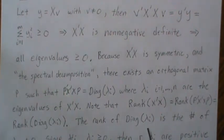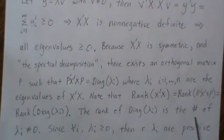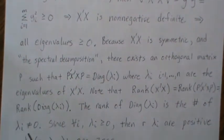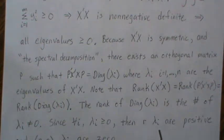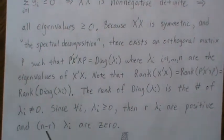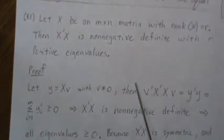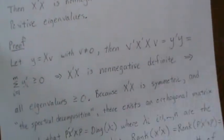But since we showed that each lambda I has to be greater or equal to zero, then R lambda I are positive, and N minus R lambda I are zero, and so this is proven.